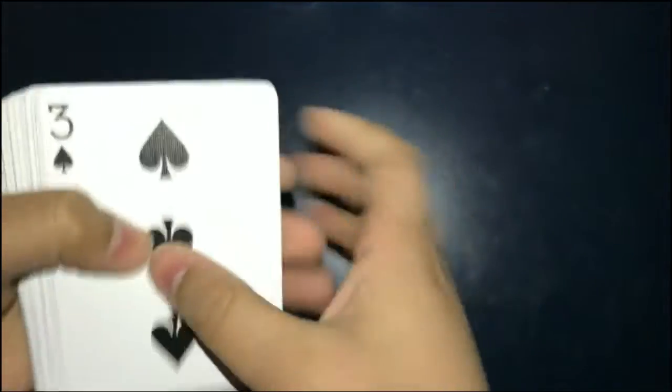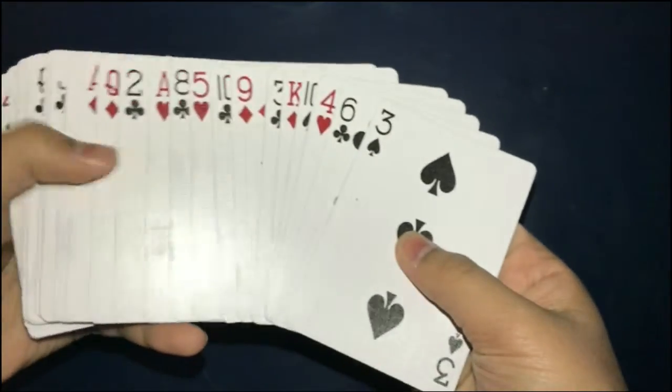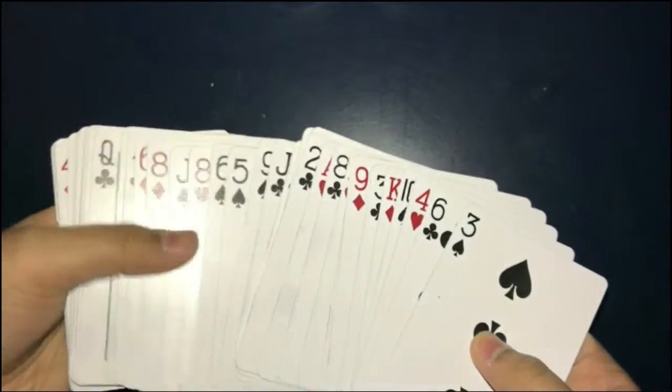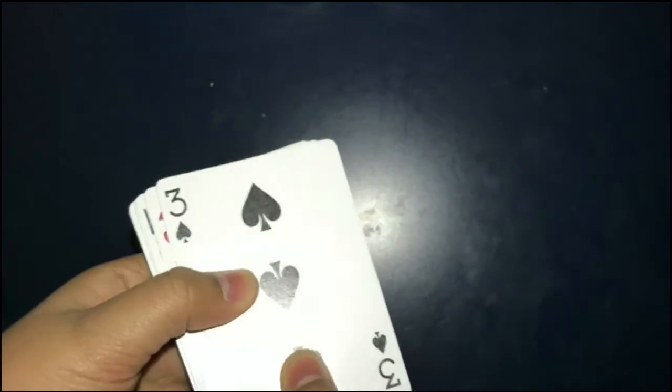...is before they choose a card, spread out the cards face up and say 'as you can see, all the cards are different.' When you say this, look at the bottom card. The bottom card is going to be the key card. Make sure it does not leave the bottom of the deck.